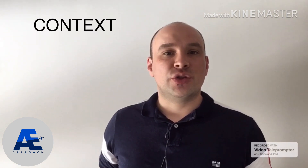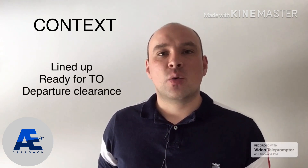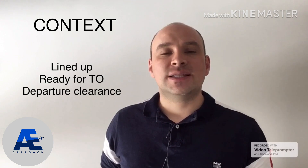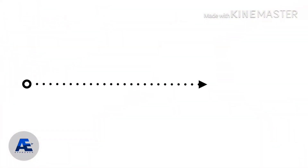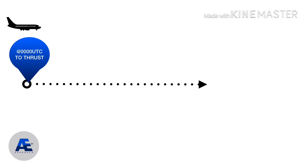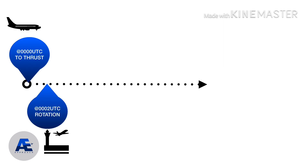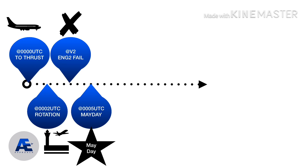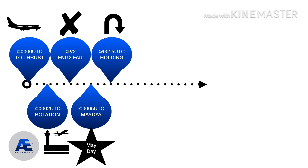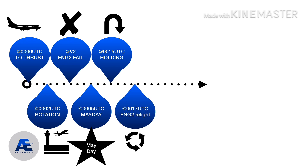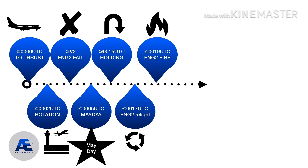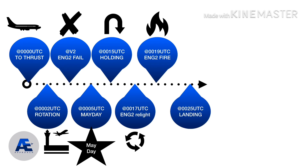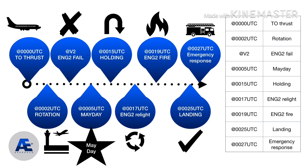The situation began with the aircraft lined up on the runway, ready for takeoff and with clearance for departure. Here is our timeline, beginning at 0000 UTC with takeoff thrust, rotation at 02, engine 2 failure at 05, Mayday at 05, holding pattern at 15, engine 2 relight attempt at 17, engine 2 fire at 19, landing at 25, and emergency response at 27. We will show a table with each one of the events.